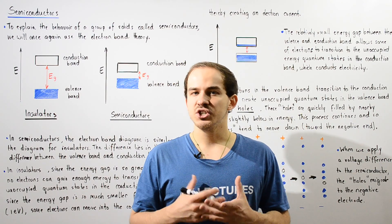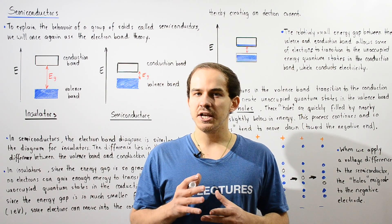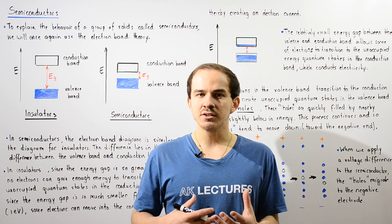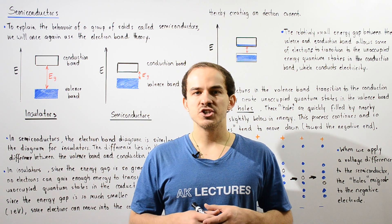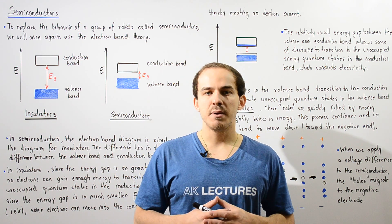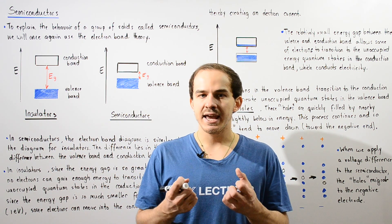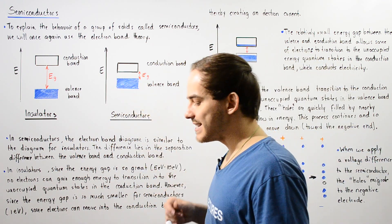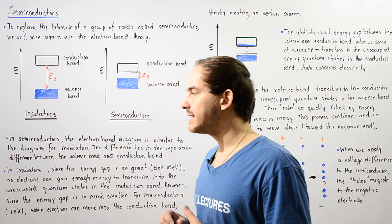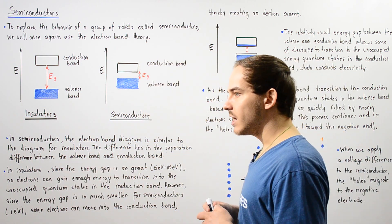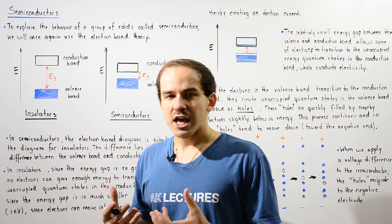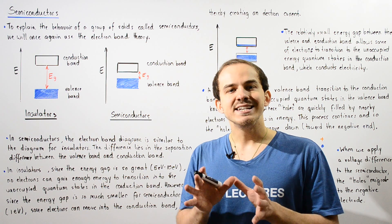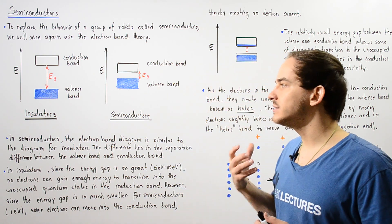Previously we were able to use the electron band theory of solids to help explain the behavior of conductors and insulators. Now we're going to apply the electron band theory to help explain the behavior and properties of a group of solids known as semiconductors. Basically, semiconductors are a group of solids that are able to conduct electricity, but not as well as conductors.